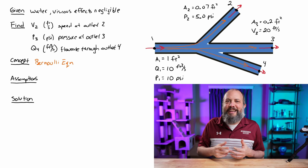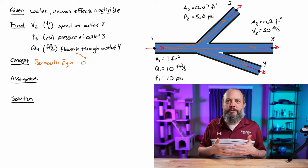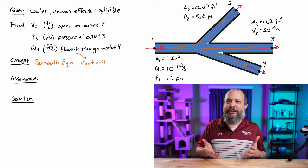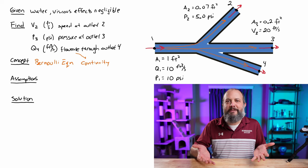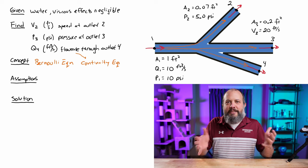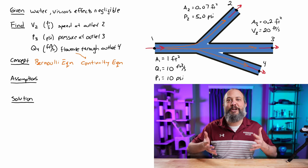But looking ahead, I can also see that in order to find the flow rate through section four, I'm also going to need to use the continuity equation. Continuity equation is the fancy fluid mechanics way of saying conservation of mass.